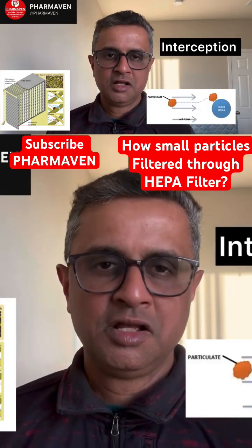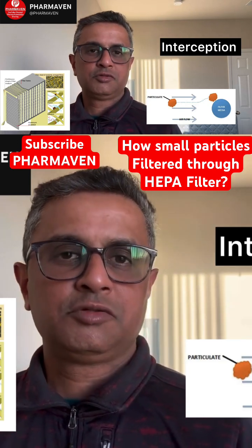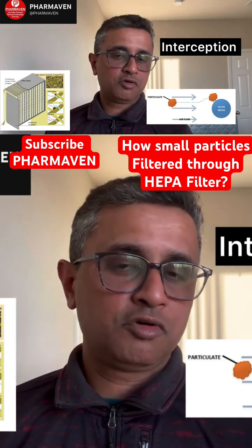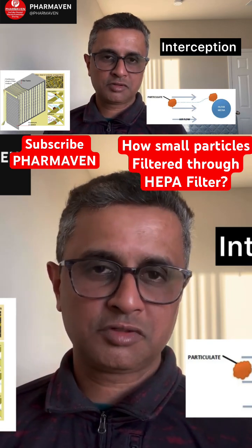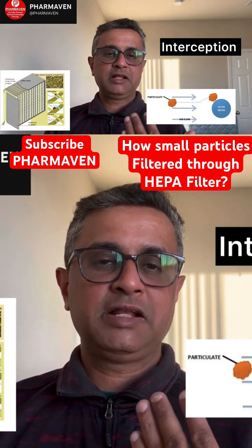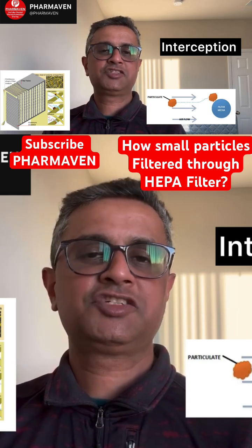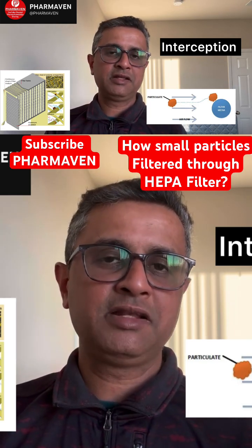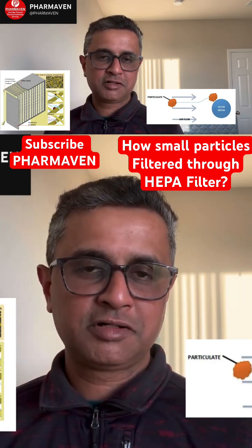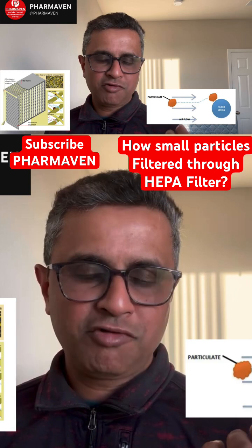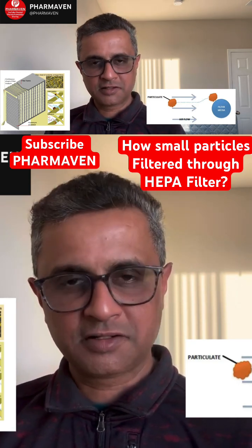The third mechanism is interception. Particles smaller than 0.3 microns are very small and have very low mass. When they travel through the HEPA filter structure and come into contact with the fibrous structure, they get attached to it. Because of their very small mass and size, they cannot be carried away by the air velocity, so they get attached to the fibers and get filtered.